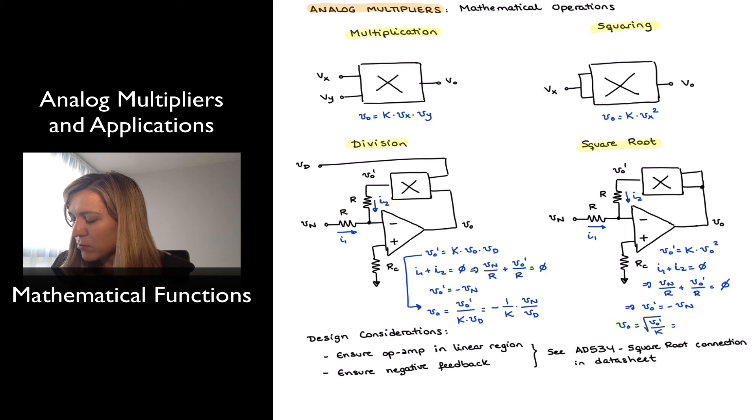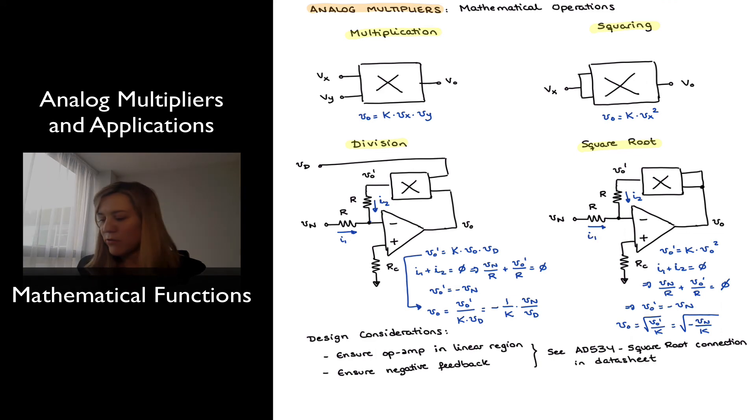Or since vout prime is equal to negative vn, I will have this is equal to the square root of negative vn divided by k, or negative 1 over k times vn. So in other words, the output is proportional to the square root of, in this case, negative vn.